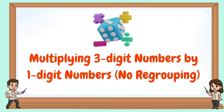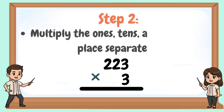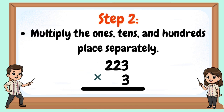Multiplying three-digit numbers by one-digit numbers — no regrouping. Step 1: Write the numbers vertically. Step 2: Multiply the ones, tens, and hundreds place separately.